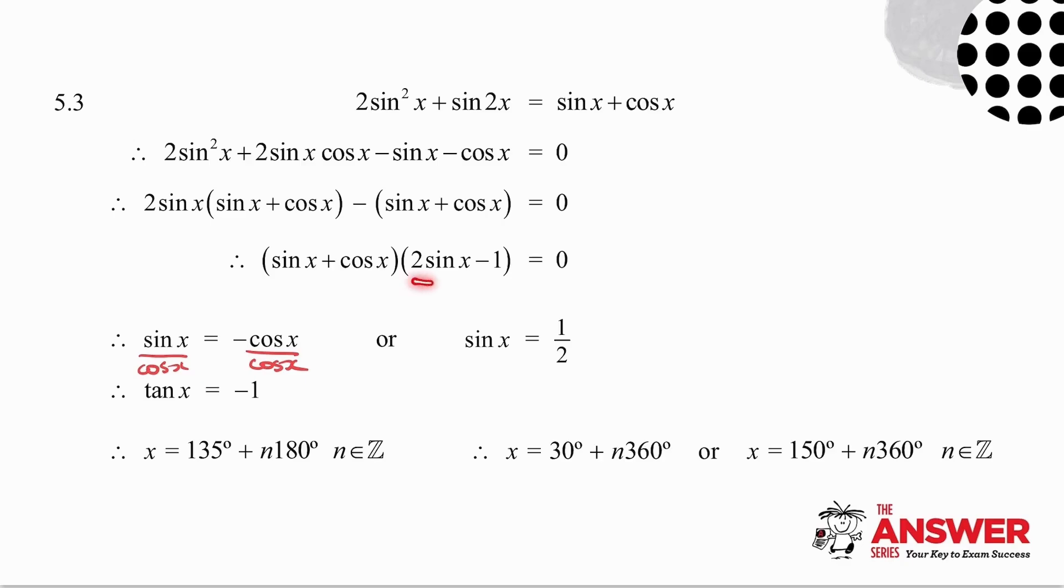My other alternative is that sinx is equal to a half. If from the second bracket, sinx is positive in the first and second quadrants. So x could either be 30 degrees plus n times 360 or 150 degrees plus n times 360. And don't forget, you need n an element of z.